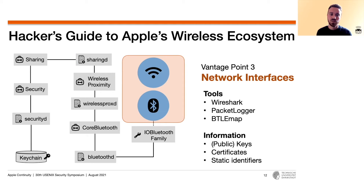What data is actually sent wirelessly? In our third vantage point, we are looking at the network interfaces. In most cases, devices would use Bluetooth advertisements to inform a nearby device about an upcoming service request, then use Wi-Fi or Apple's proprietary AWDL to transfer data. We try to understand how devices are communicating and what they are sending. It is likely that parts of the communication will be encrypted, and we need our binary analysis or a machine-in-the-middle proxy to break the encryption.